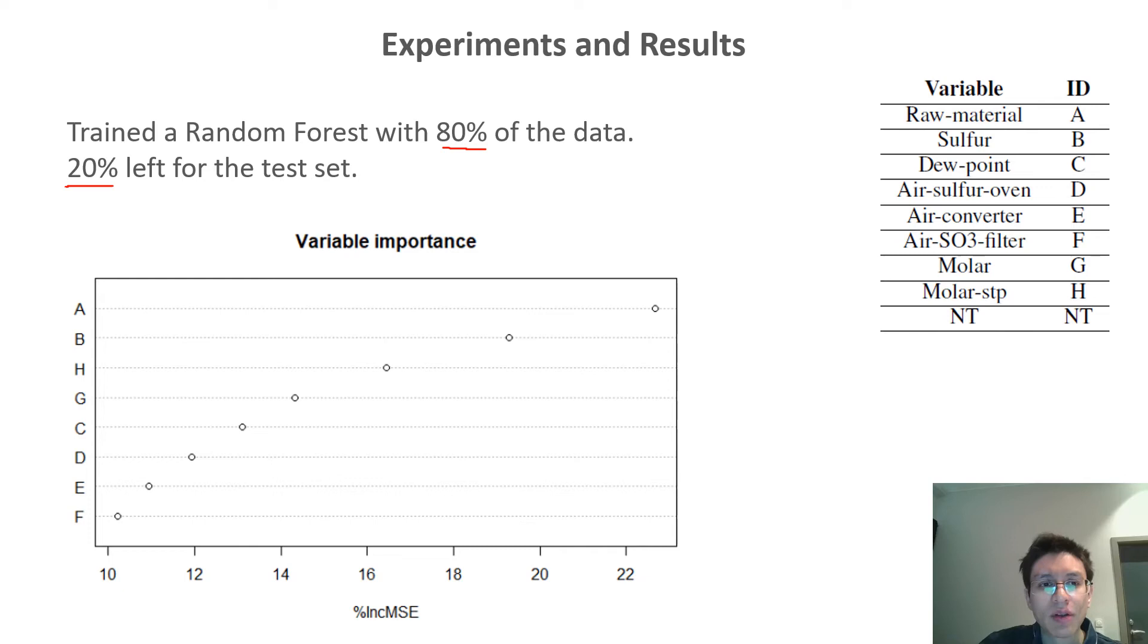In this case, we can see that the top three most important variables are A, B, and H. If we look at the table at the right, we see that A corresponds to the raw material, B is the amount of sulfur, and H is the molar weight.